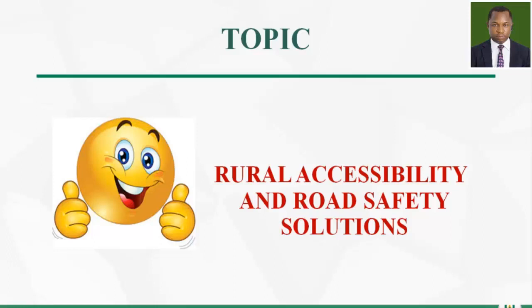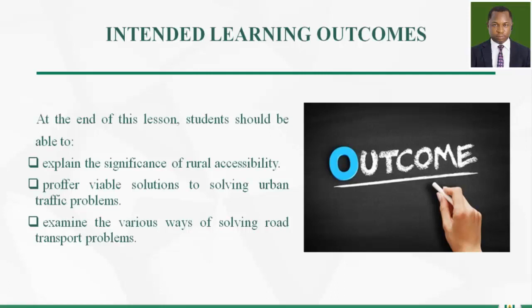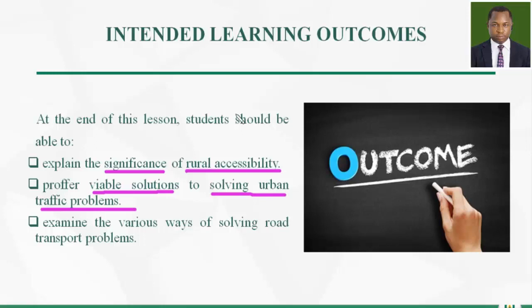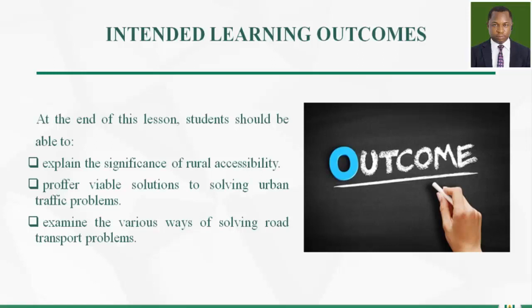Much content is available in your course material and you will want to look into that. So what are the intended learning outcomes for this lesson? At the end of this lesson you should be able to explain the importance of rural accessibility, propose viable solutions to solving urban traffic problems, and examine the various ways of solving road transport problems in general.